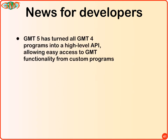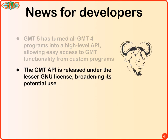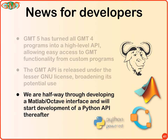For developers, GMT 5 has turned all the GMT 4 programs into a high-level API library that you can use to write your own code, released under the GNU Lesser License so commercial entities can use these libraries without issues. This broadens the potential use of GMT. We are halfway through developing an interface to MATLAB and Octave that lets you access all GMT programs from MATLAB. We can also develop a Python API right after finishing the MATLAB API — many people are using Python these days and want to call GMT, and while you can do it as system calls, calling it as a function where you can store and pass variables between functions will be much slicker.